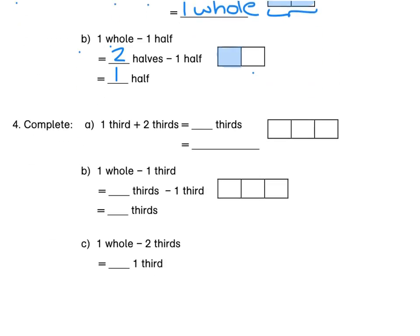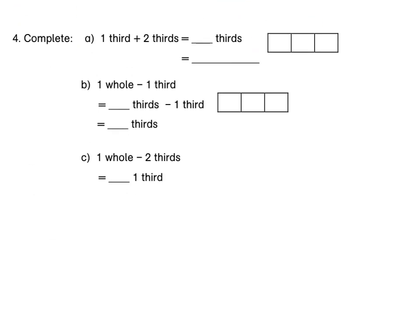Let's move on to 4. 1 third plus 2 thirds means that we've shaded the whole diagram — so 3 thirds. And that means that 3 thirds is equal to 1 whole.